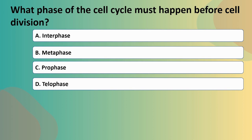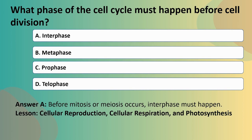What phase of the cell cycle must happen before cell division? A: Interphase. B: Metaphase. C: Prophase. Or D: Telophase. The cell cycle is a circular process which regulates cell division, and it can be divided into two major phases: interphase, and the mitotic phase, which includes metaphase, prophase, and telophase. So the answer is A, because before mitosis or meiosis can occur, interphase must happen.